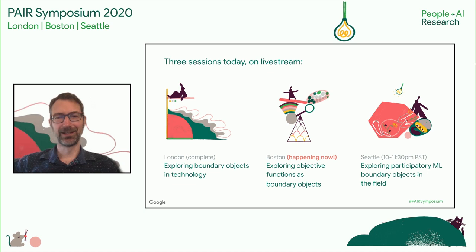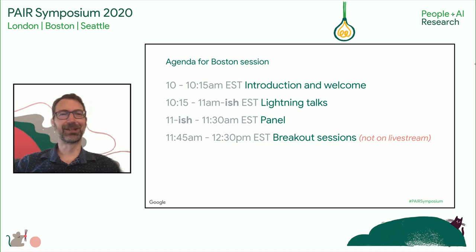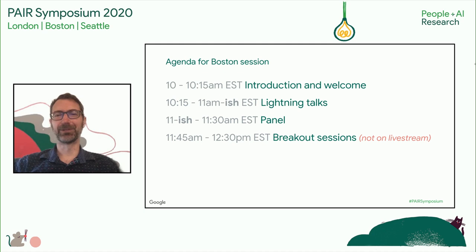For the Boston session, the agenda looks something like this. We're going to welcome you, do a little bit of housekeeping, and explain the theme of the session. There will then be lightning talks by our three fantastic panelists. We may finish the lightning talks a little before 11, giving us extra time for the panel. The panel should wrap up around 11:30, and from 11:45 to 12:30 p.m., for those signed up, there are breakout sessions for small group discussion.